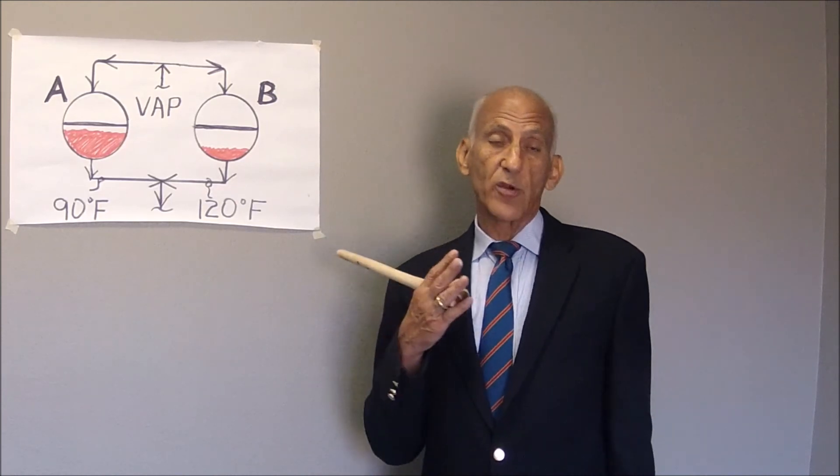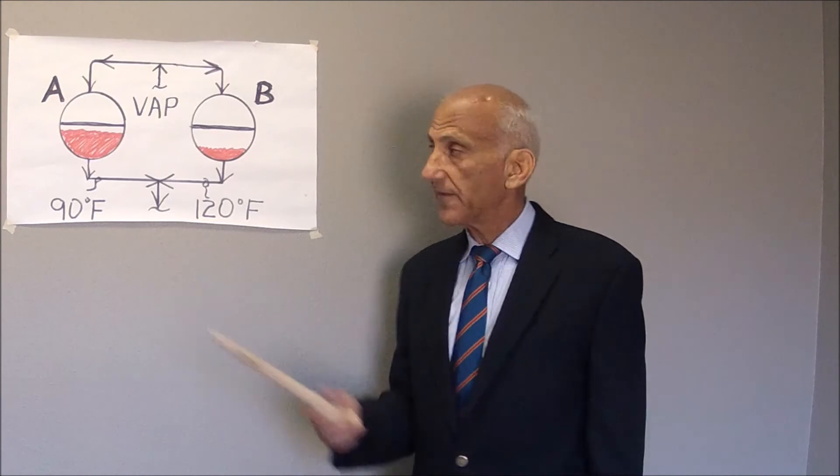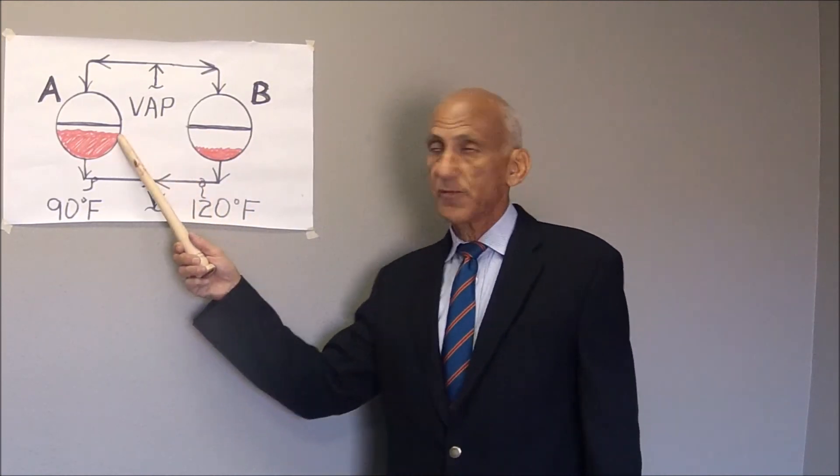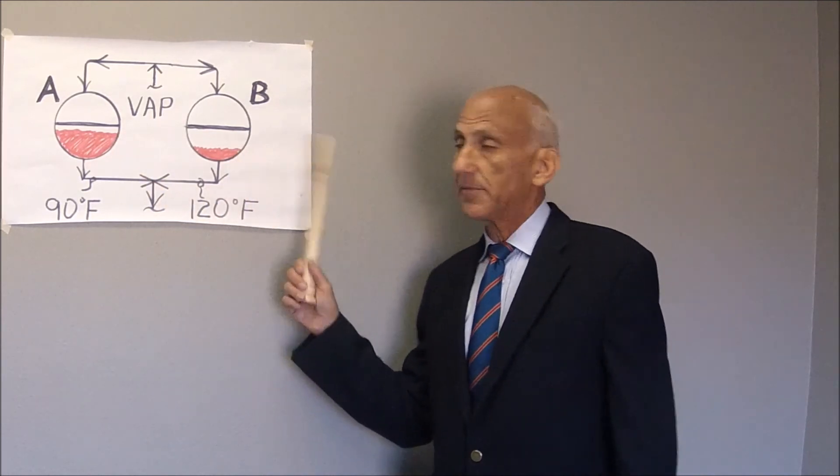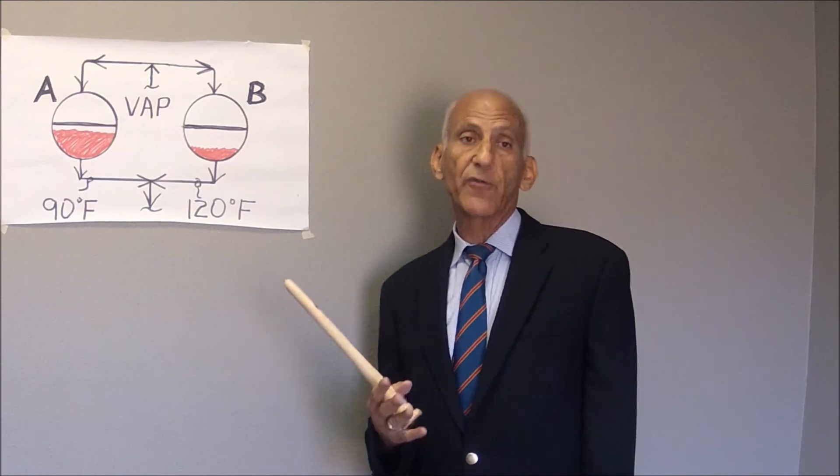that then would correspond to a liquid vapor interface inside the condenser. And as you can see, that interface would be higher in A than B, and that is the way I would do it in the field with my infrared temperature gun.